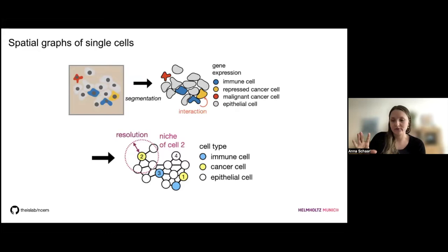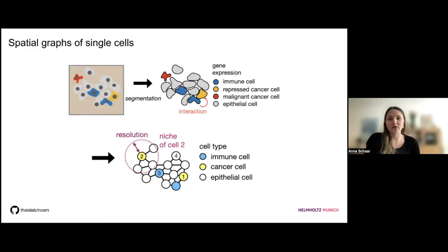We grouped the cancer cells to a joint annotation because we want the model to infer that there is a spatial variation dependent on the immune cell nearby in the niche. So we group cancer cells to a general label together, and we would like the model to infer that an immune cell in close proximity has an impact on the gene expression space of cancer cells.